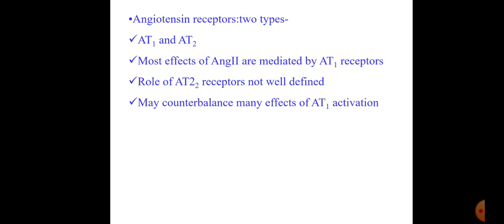Angiotensin receptors are of two types: AT1 and AT2. AT1 is the major subtype — most effects of angiotensin 2 are mediated by AT1 receptors. AT2 is activated when AT1 receptors are blocked. The role of AT2 receptors is not fully defined, but they may counterbalance many effects of AT1 activation. AT1 receptor activation produces vasoconstriction and other effects maintaining plasma volume, whereas AT2 receptors mainly cause vasodilation.